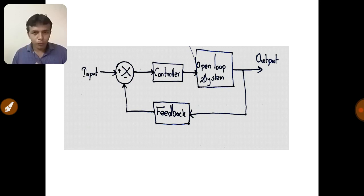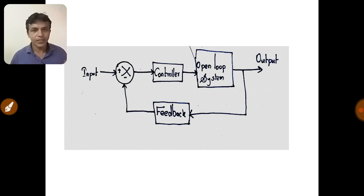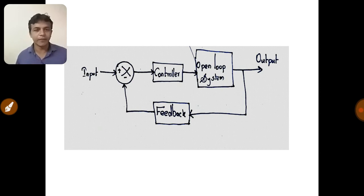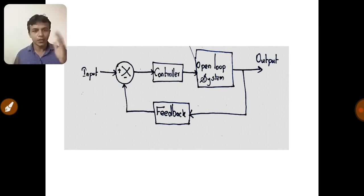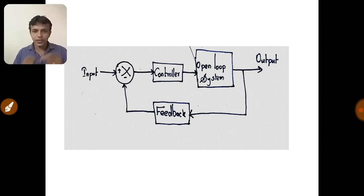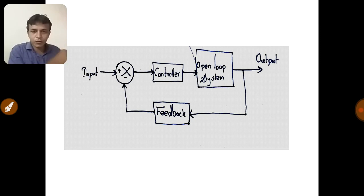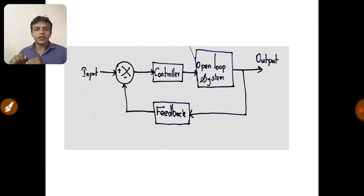Compared to open loop system, closed loop system is more advantageous, although it is complex. To understand this, let us take the illustration of a railway gate. In olden days, when the train comes, the guard closes the gate manually — he comes down to the road and closes the door by hand. That is a manual system.